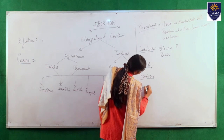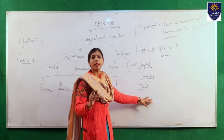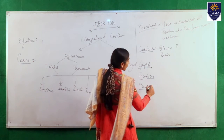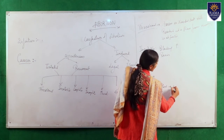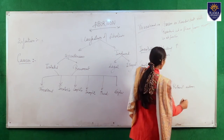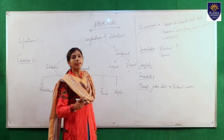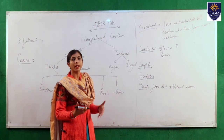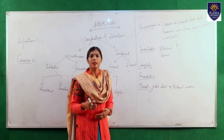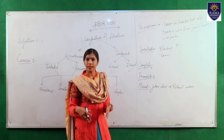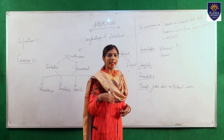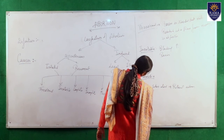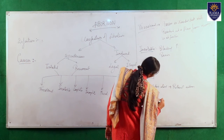Incomplete abortion, as the name indicates, means some part of the product of conception is expelled from the uterine cavity while some part remains inside. Missed abortion means the fetus has died and is retained inside the uterine cavity. The female usually identifies this after some time when she is no longer able to feel fetal movements, or the early pregnancy symptoms like nausea and vomiting disappear. An ultrasound then confirms fetal death.